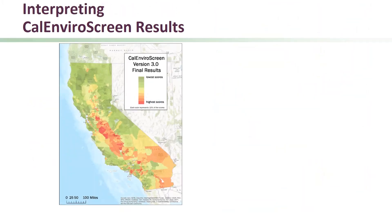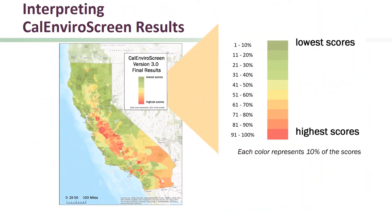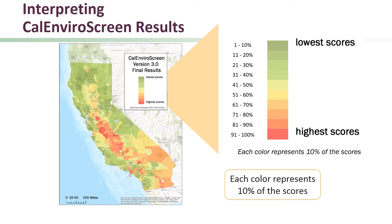The legend shown in the top right of the map shows the ten categories ranging from green, representing the lowest scoring areas, to red, representing the highest scoring areas, with yellowish colors in between. A higher score represents a relatively higher pollution burden and more vulnerable populations. All census tracts were assigned a CalEnviroScreen score, and each score falls into one of the ten categories shown here.